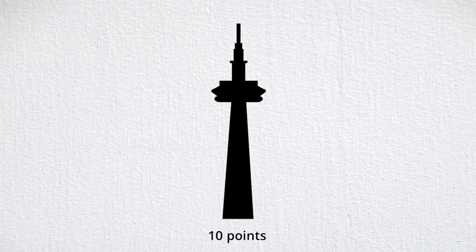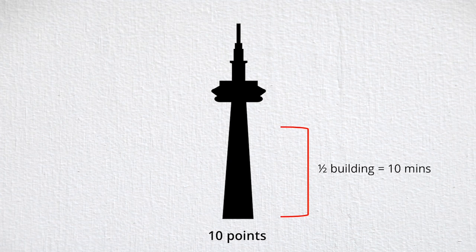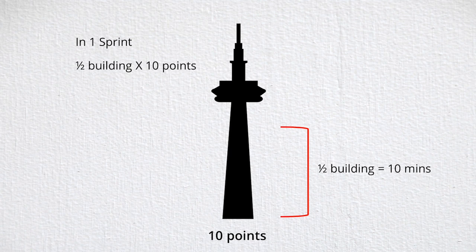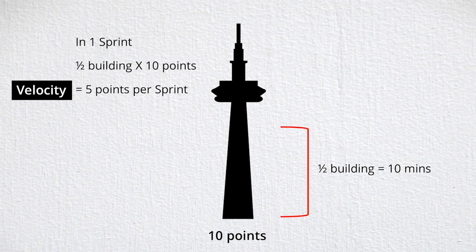So to the first building stairwell we go. And after 10 minutes, we find ourselves halfway up building one, the 10-point building. Now with this information, we can work out what our velocity is – or in other words, the amount of work in points that we are able to achieve within our 10-minute sprint. Based on the fact that we climbed halfway up the 10-point building, we can say that our velocity is five points per sprint, or more simply put, five points.